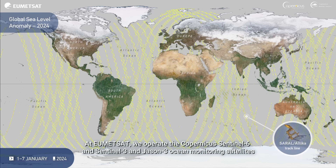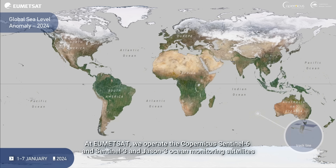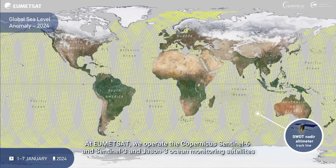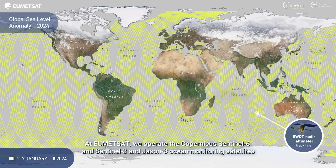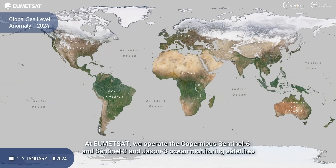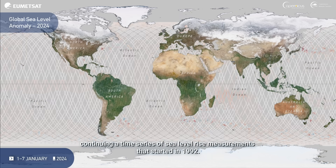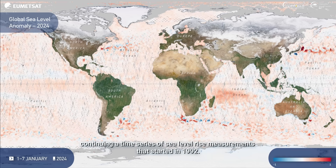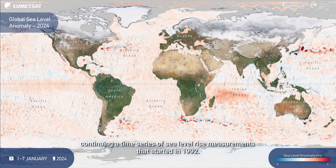At UMITSAT we operate the Copernicus Sentinel-6, Sentinel-3, and Jason-3 ocean monitoring satellites, continuing a time series of sea level rise measurements that started in 1992.